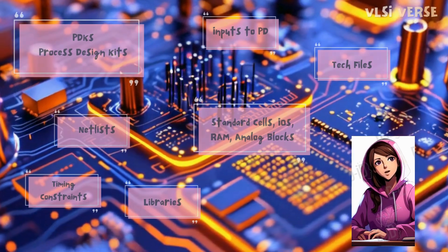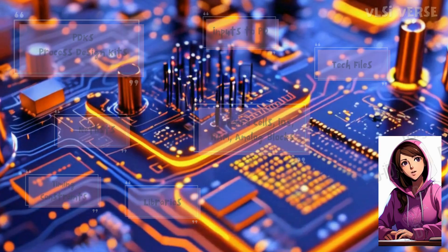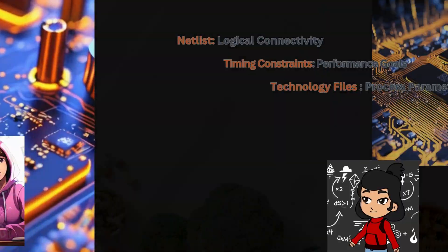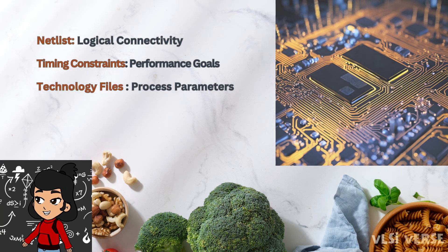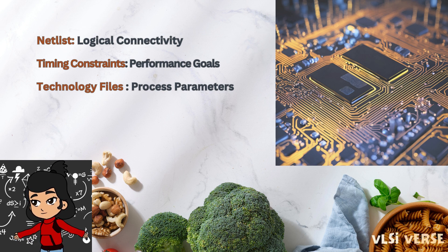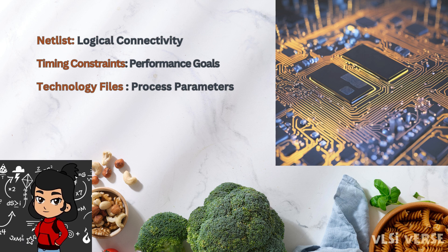Now let's talk about the inputs needed for physical design. Before you start placing and routing your chip, you need three main inputs: the netlist, timing constraints, and technology files. These inputs define the logic of the design, its timing constraints, and physical parameters for manufacturing.